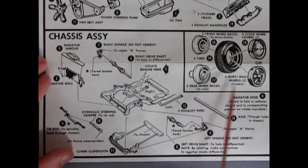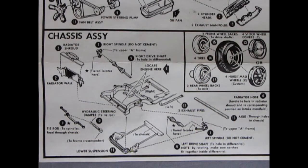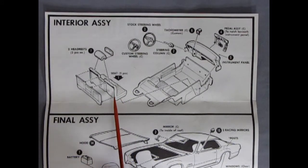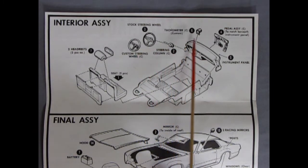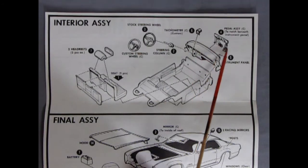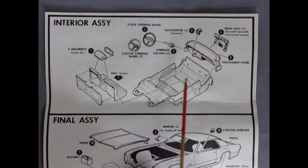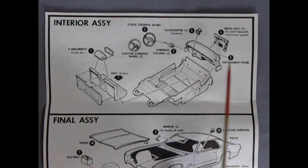Here we have our back panel with our bench seat front and back as well as our headrests which are again two pieces. You have your choice of the stock steering wheel or the custom steering wheel, the steering column, the tachometer which is chrome, same as the steering column by the way. There's our pedal assembly same as in that Cadillac, and then you've got your dashboard sitting here, our instrument panel all going into this interior bucket.